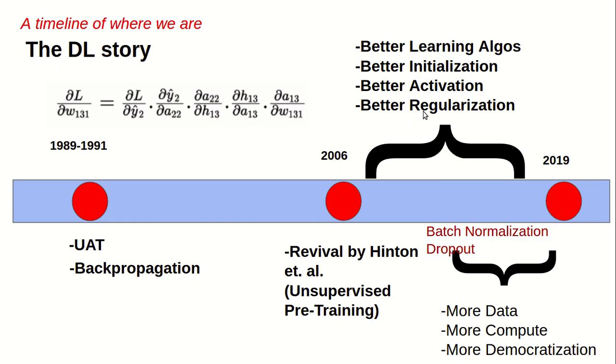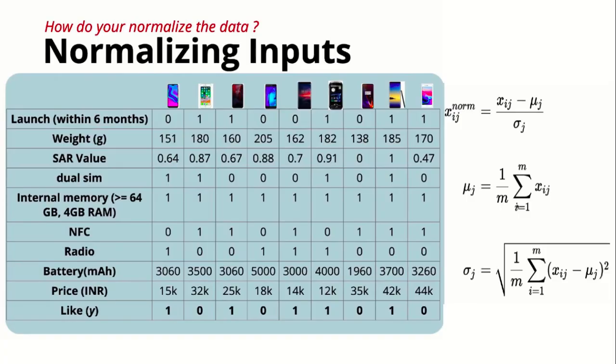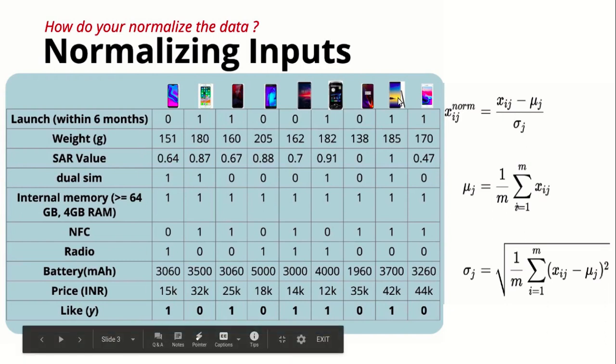in new methods and techniques. They started finding new learning algorithms, better initialization, better activation functions, and better regularization that you might have already seen. Today we're going to see batch normalization and dropout that come in regularization. Let's see what normalization is first. So, what is data normalization? We have all these features of a mobile phone, and this is the matrix X.